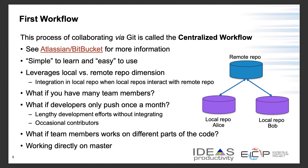Similar to SVN, in centralized workflow you have a central repo and everybody checks out that central repo on their local machine. The default development branch is called master, and all changes are committed to master. People can check out master, make local modifications, and commit back those changes. Issues arise when more than two or three people are working on the same code, with some committing once a month and others more frequently, leading to code conflicts.